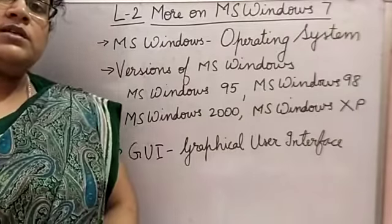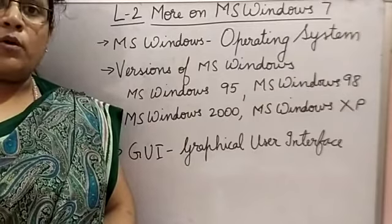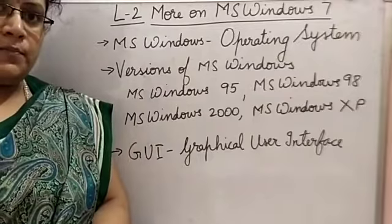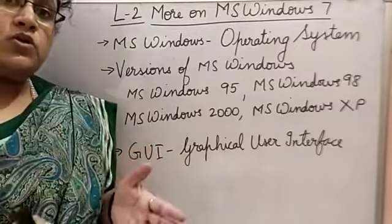MS Windows is an operating system that is used in our personal computers or laptops. MS Windows 7 is the most used operating system. It helps the computer to work, it gives the computer an environment to work.